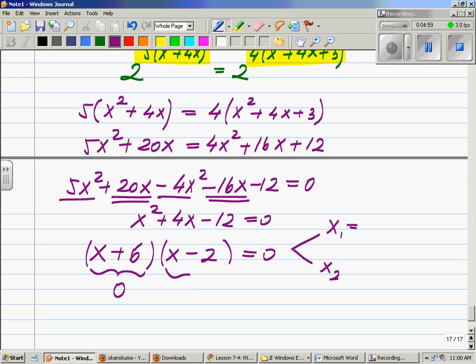This gives you your two solutions, x1 and x2. You make each one of these zero: x plus 6 equals 0, x minus 2 equals 0. If you solve x plus 6 equals 0, x1 would be negative 6. If you solve x minus 2 equals 0, your second solution will be x equals 2. And this is the answer.